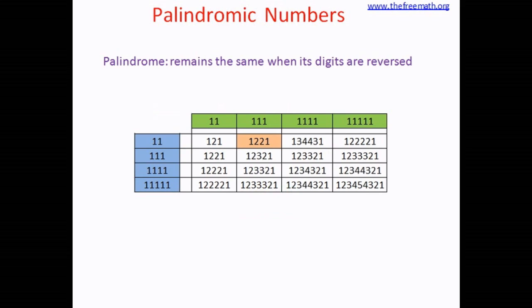Or if you multiply 111 from the first column with 111 in the top row, you get 12321. So this is how this grid is created.